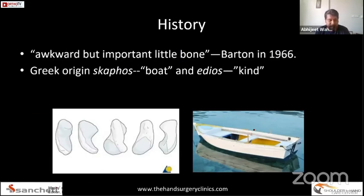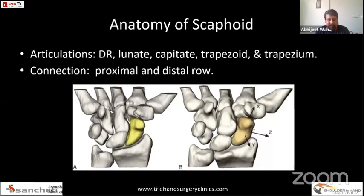Way back in 1966, Barton observed that the scaphoid is an awkward but important little bone — a boat-shaped bone, which is where it derives its name. The scaphoid is an obliquely oriented bone that crosses both carpal rows. It is an important part of the proximal carpal row, attached by the scapholunate ligament to the lunate, and the important scaphotrapezial and scaphocapitate ligaments, which are critical in maintaining the kinetics and kinematics of the wrist joint.